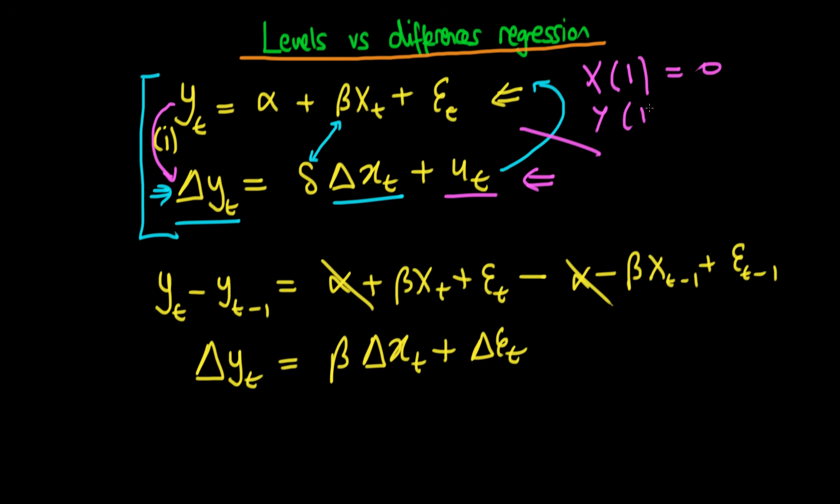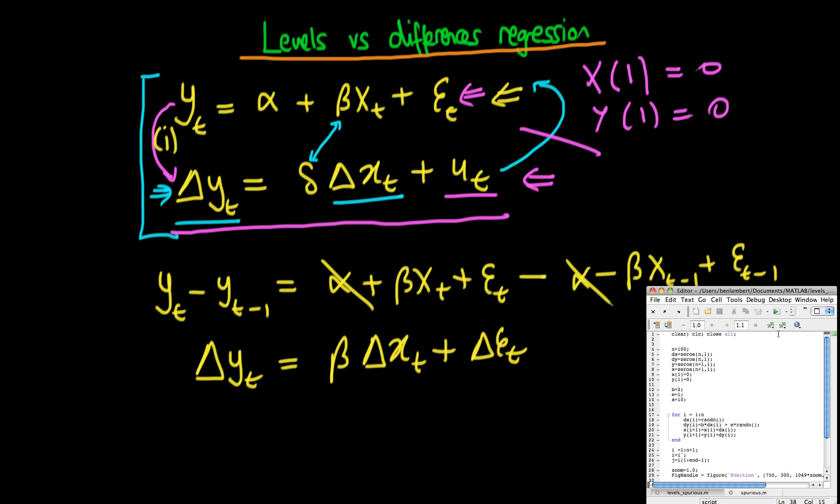And if I assume that the value of y at time 1 also equals 0, then we can go on to actually rebuild the levels of y and x. But notice that I haven't assumed anything about there being a stable relationship between y and x. All I've assumed is that there is this stable relationship between the change in y and the change in x. Okay, so now running my simulation...